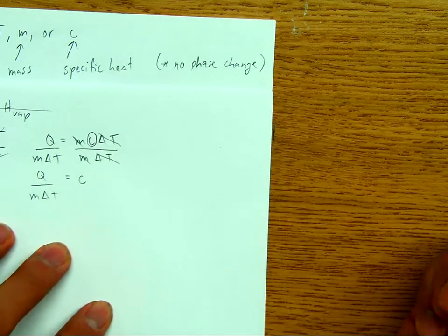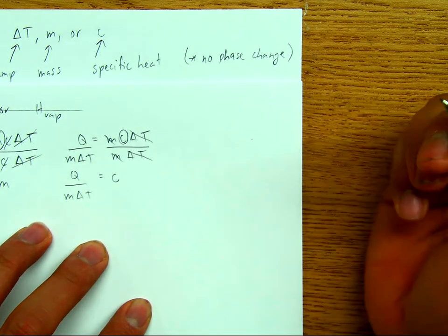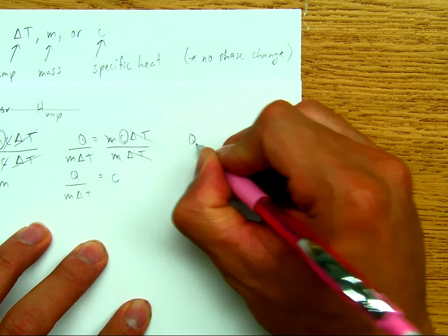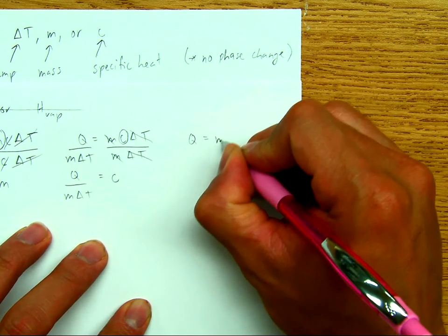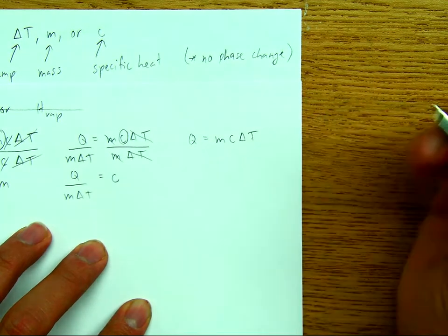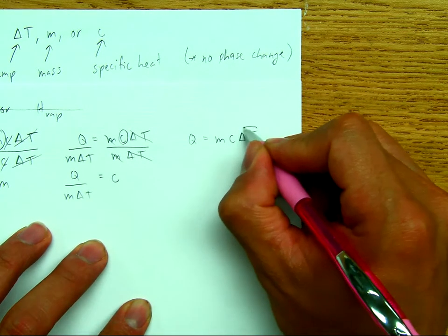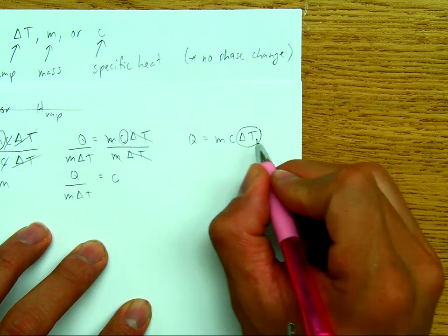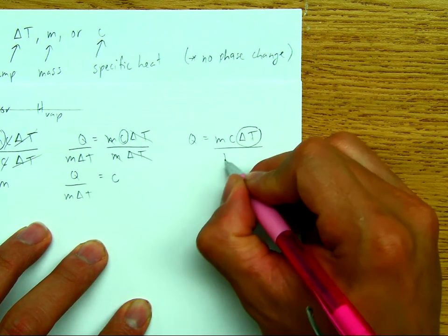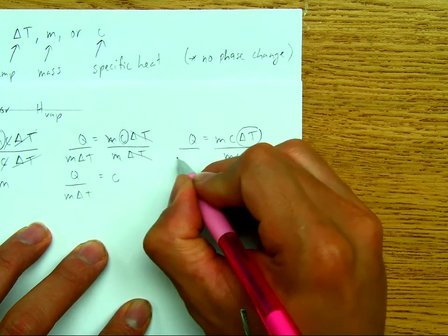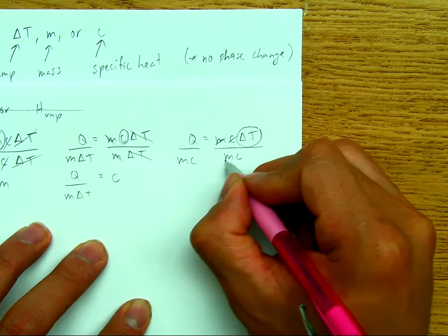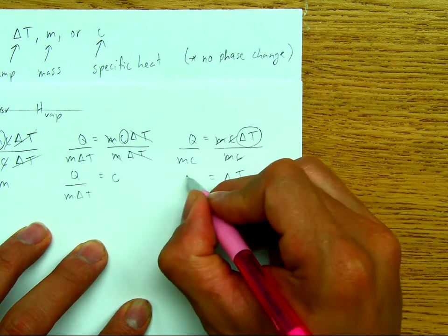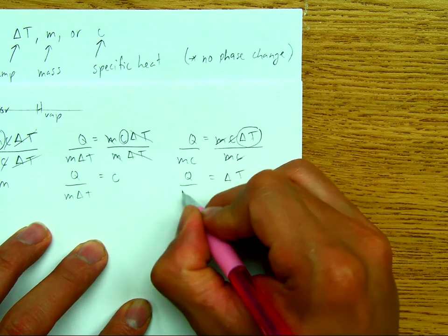So the last one will be if we have no phase change and we're trying to isolate for delta t. So q equals m, c, delta t. We're trying to isolate for the change in temperature, right? So the opposite of to multiply by m and c is to divide by m and c on both sides. So now your m's and c's will cancel so that you're left with delta t by itself. Delta t equals q over m and c.